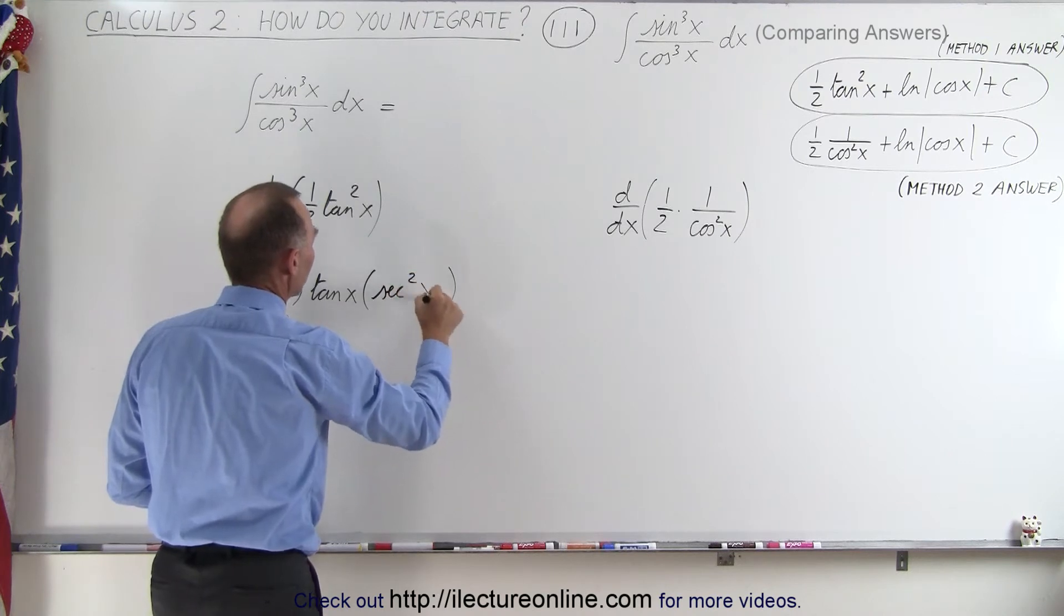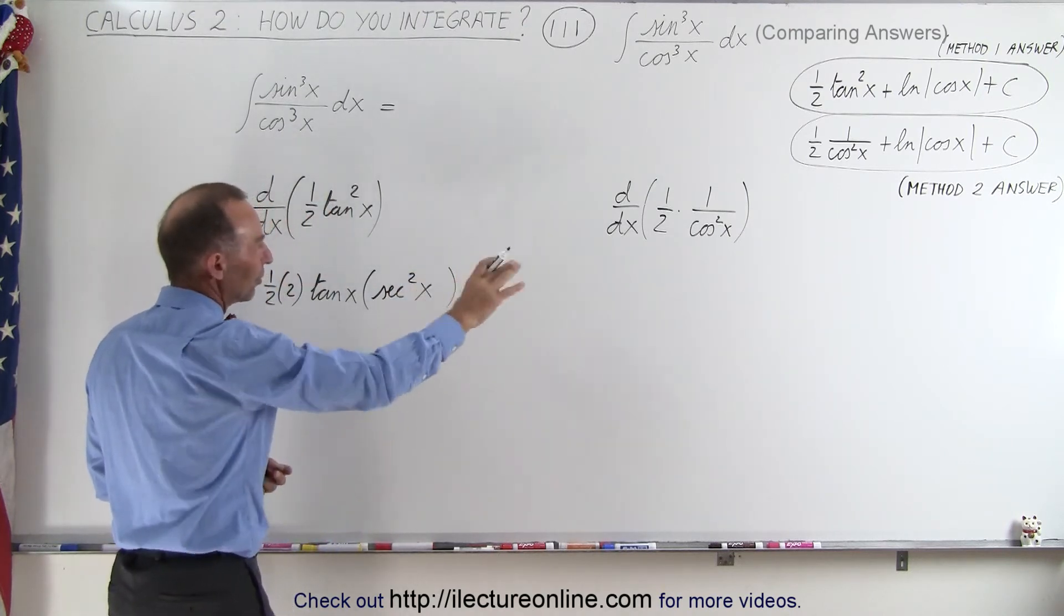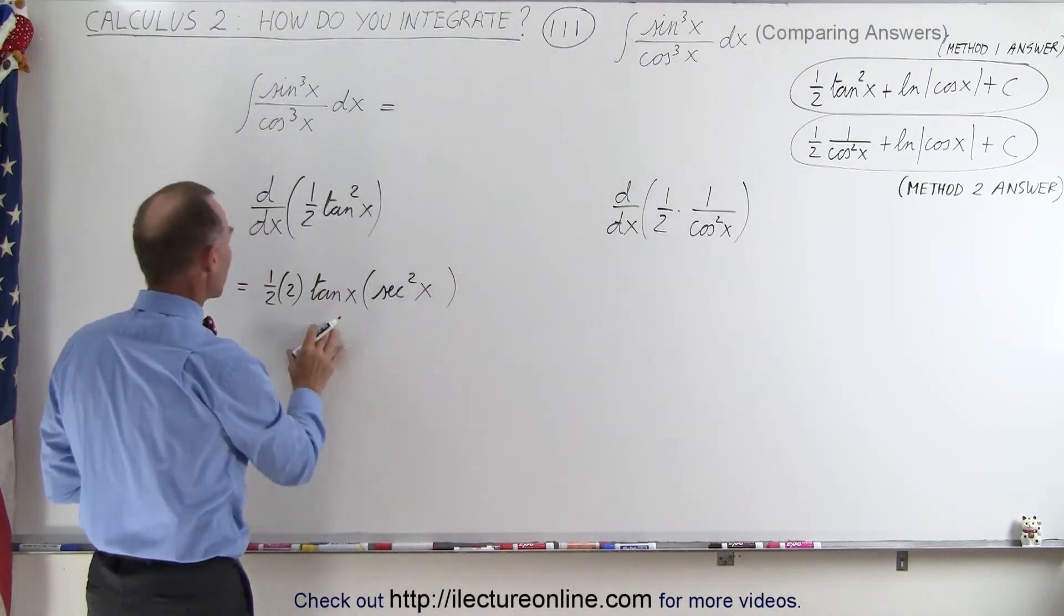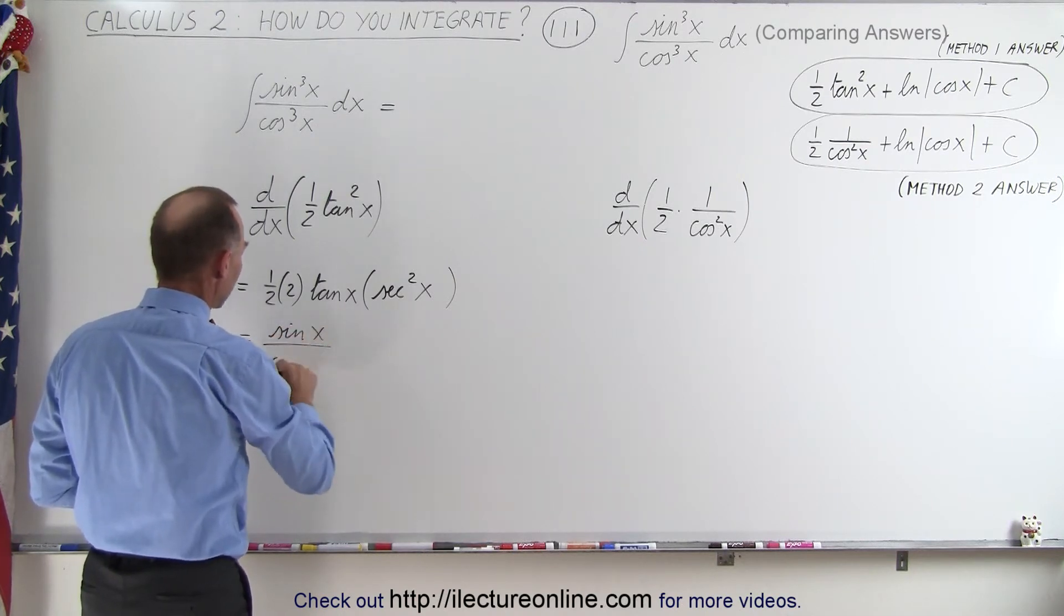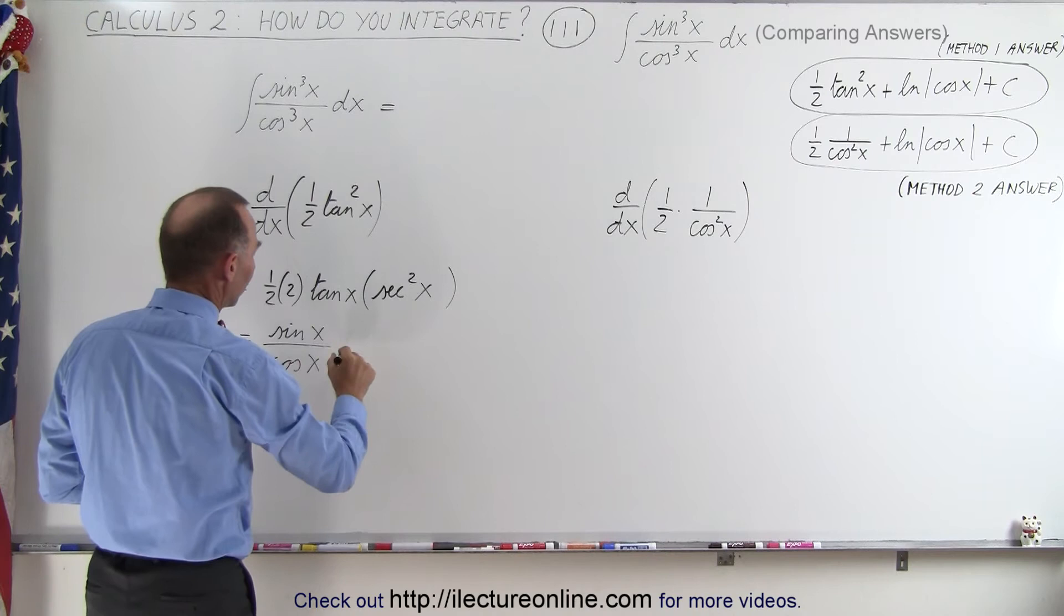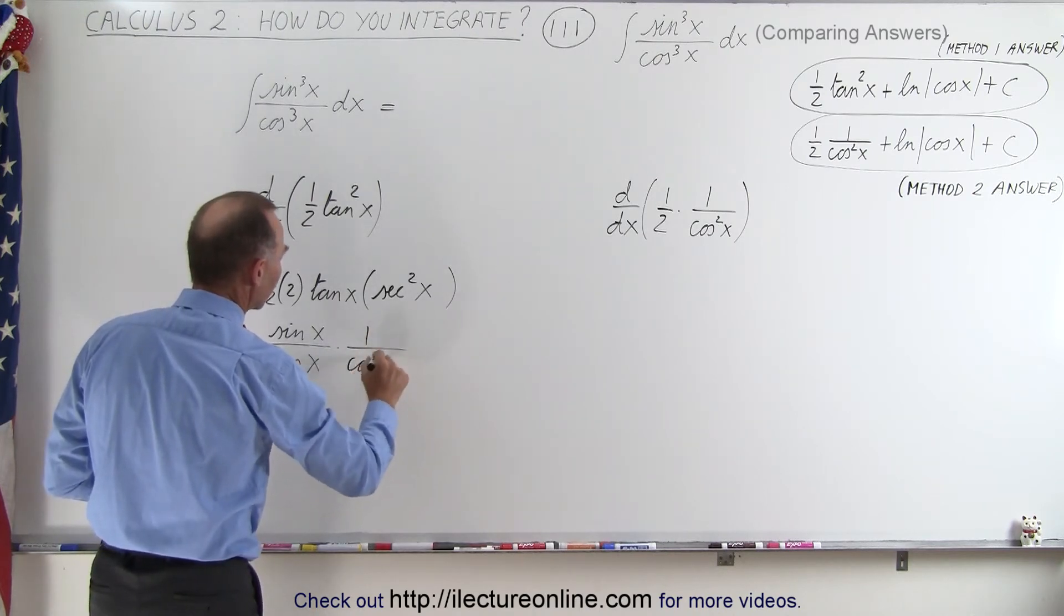So that's the secant squared of x. And then let's continue here. So this cancels out. The tangent of x is equal to the sine of x divided by the cosine of x and the secant squared of x is of course one over the cosine squared of x.